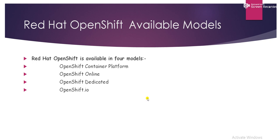Now we'll discuss the Red Hat OpenShift available models. Red Hat OpenShift is available in four models: the first is OpenShift Container Platform, second is OpenShift Online, third is OpenShift Dedicated, and fourth is OpenShift.io.